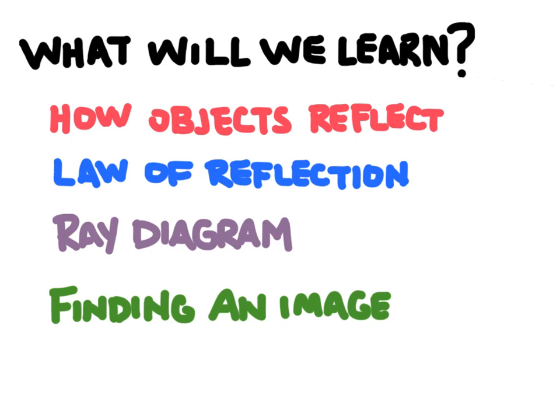Some objects are reflective, which means they are going to reflect the light that hits them. Some are going to be transparent, which means they are going to have light pass right through them, kind of like a window. And then some objects are opaque, which means that the light is absorbed by the object.